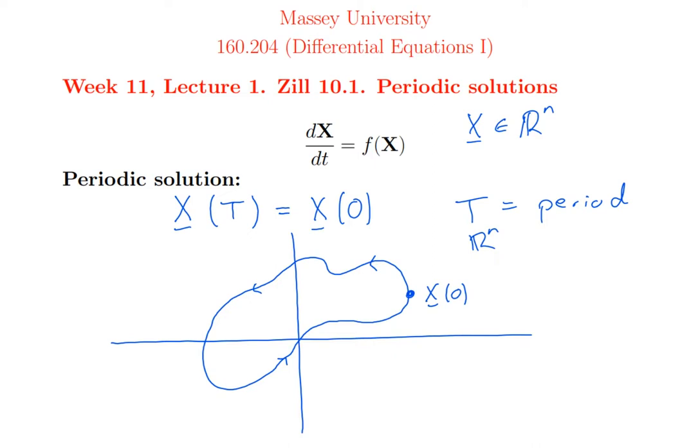Which means the phase portrait of a periodic solution must be a simple closed curve in phase space. Now, simple closed curves, those are closed curves that don't cross themselves. They're quite simple in the plane, they can be wiggly, but they all look roughly like distorted circles. But in higher dimensions, of course, they could be very complicated. They could fly around in space and they could, for example, be knotted curves.